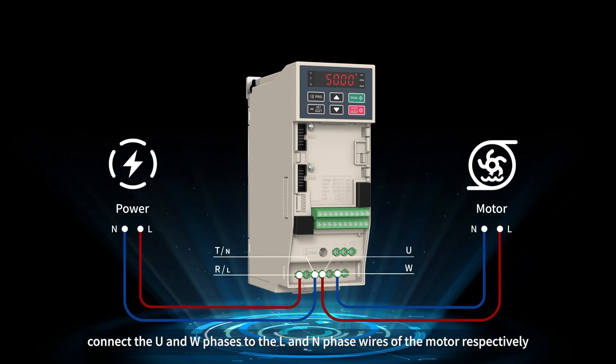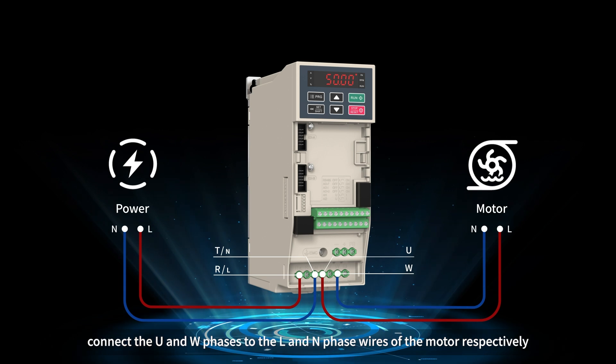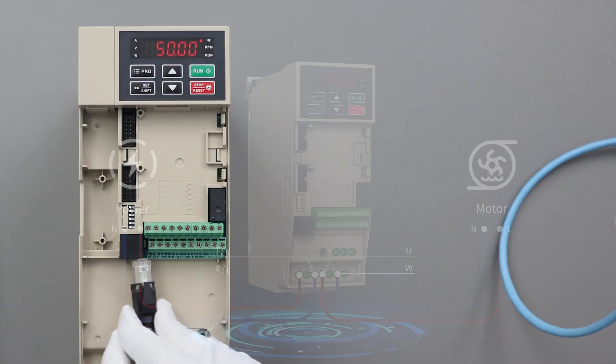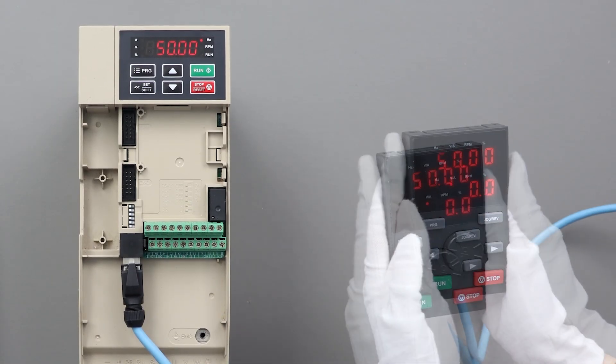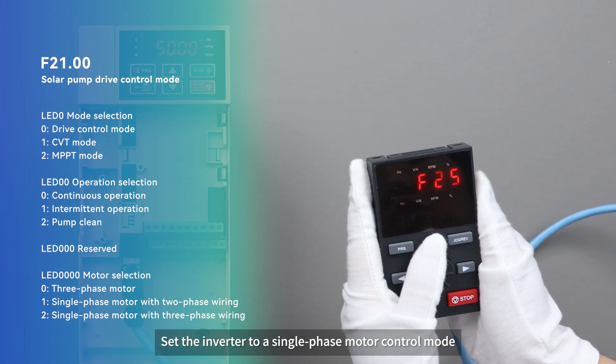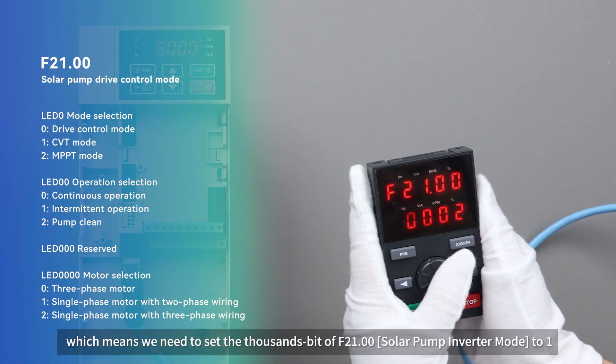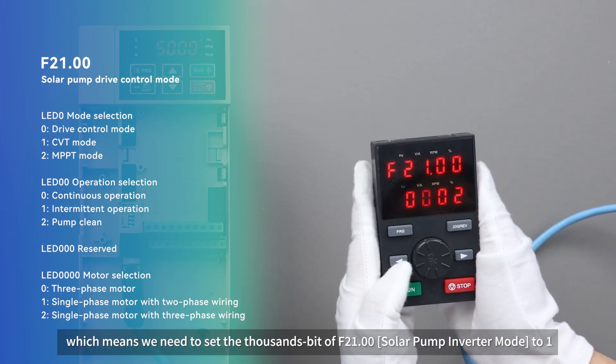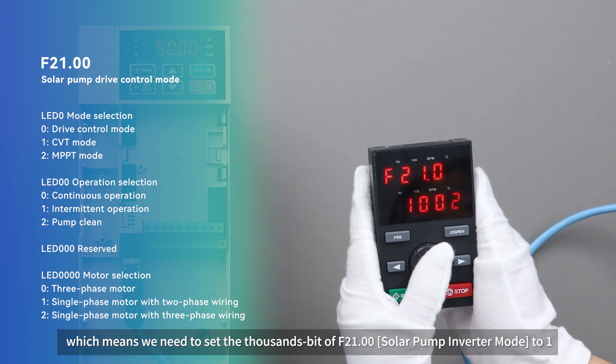Connect the U and W phases to the L and N phase wires of the motor, respectively. Set the inverter to a single phase motor control mode, which means we need to set the thousands bit of F21.00 to 1.